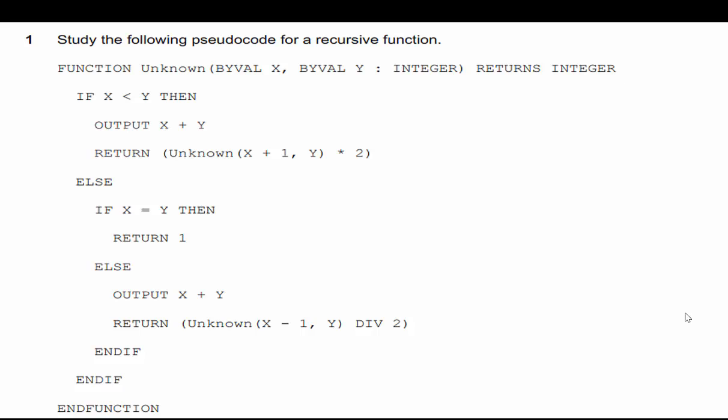It tells us to study the following pseudocode for a recursive function. They call their function 'unknown', with x and y as integer parameters, and it returns an integer. We have conditions: if x is less than y, if x is equal to y, and an else statement for when y is greater than x. I can see 'return unknown(x+1, y) * 2' — this is what makes the function recursive.